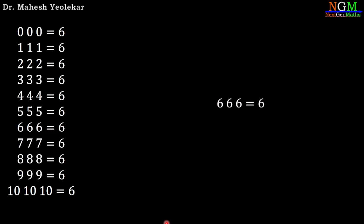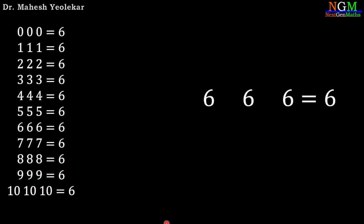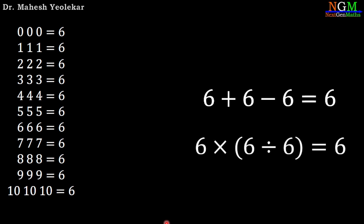First equation: 6, 6, 6 equals 6. Use the addition and subtraction operation: 6 plus 6 minus 6 equals 6. Or 6 times 6 divided by 6, so 6 times 1 equals 6.